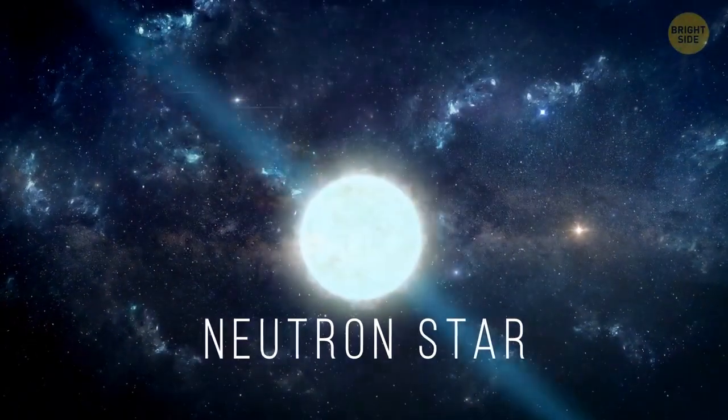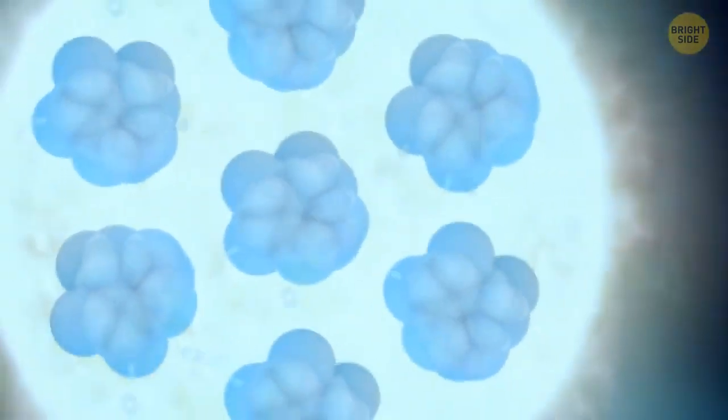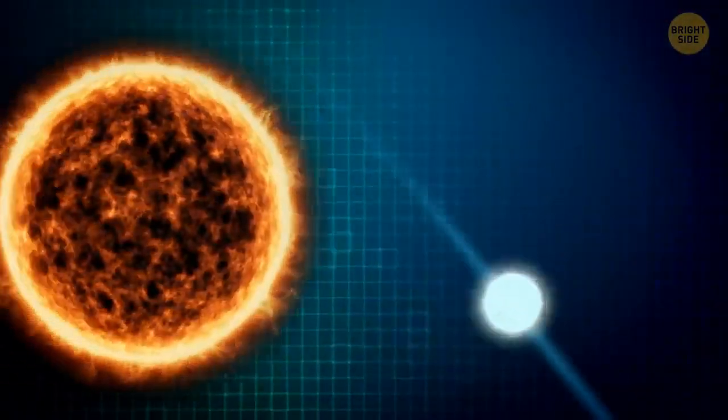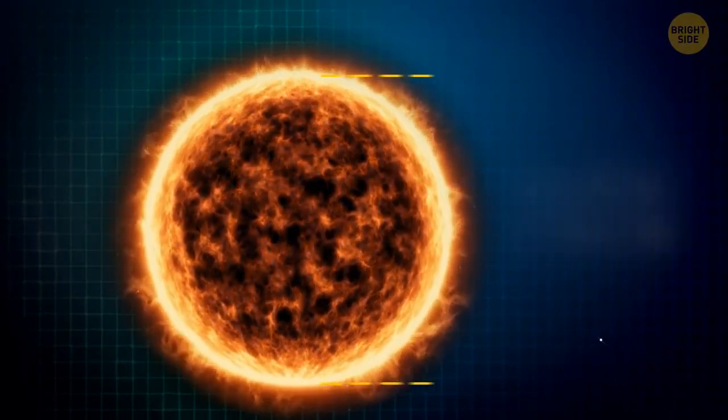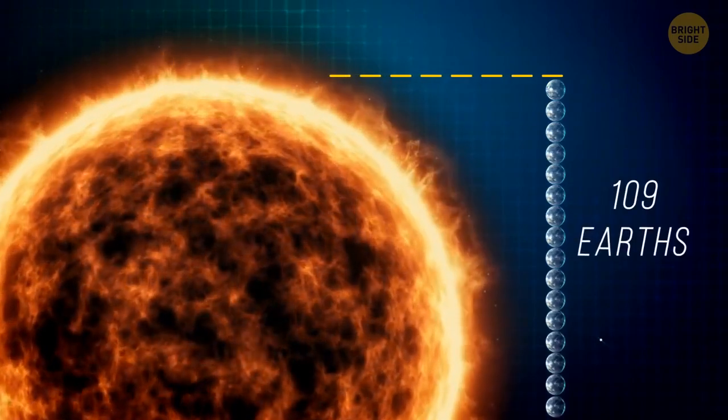It's basically a giant nucleus, the central part of an atom. These stars are mostly made up of neutrons, and are rarely larger than 20 miles across. For comparison, our sun is almost 865,000 miles across, which is 109 Earths put side by side.